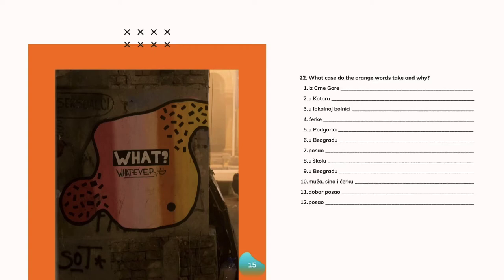U Kotoru, where is something, where do people live, that's their location, so it's locative. U Kotoru, Kotor, that's the nominative form, nominative singular masculine and in locative takes the ending U.